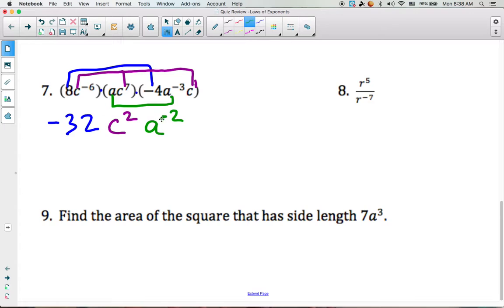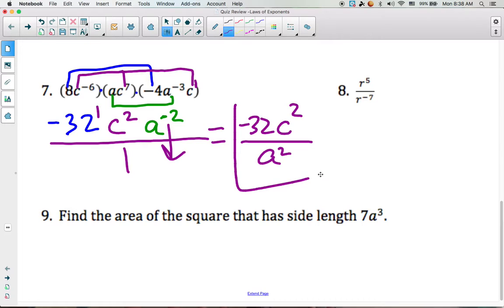You cannot have a negative exponent, so we need to take care of that. We're going to make this a fraction. Negative 32, that's a negative number, but the exponent's a positive 1. So that's going to stay in the numerator. c squared, that 2 is a positive exponent. It will stay in the numerator. The a to the negative 2, that's a negative exponent. It has to drop down to the denominator. And when it drops down, that negative 2 becomes a positive 2.